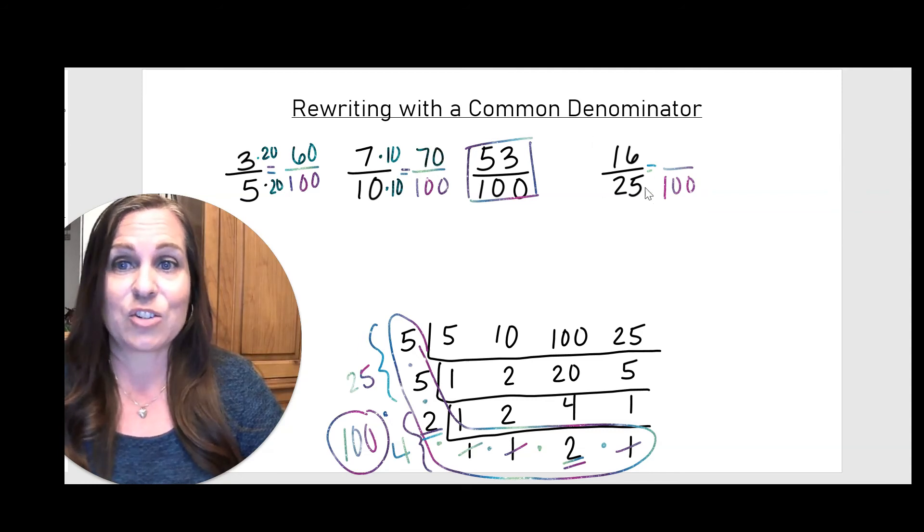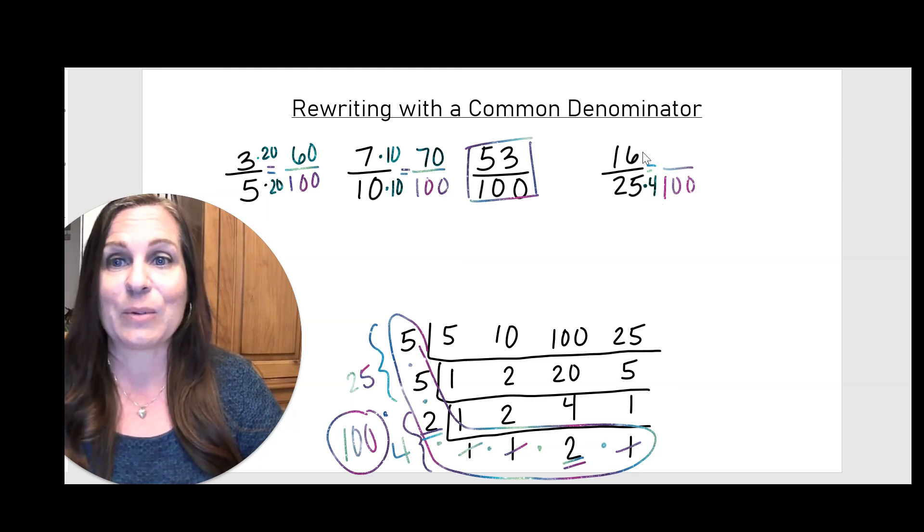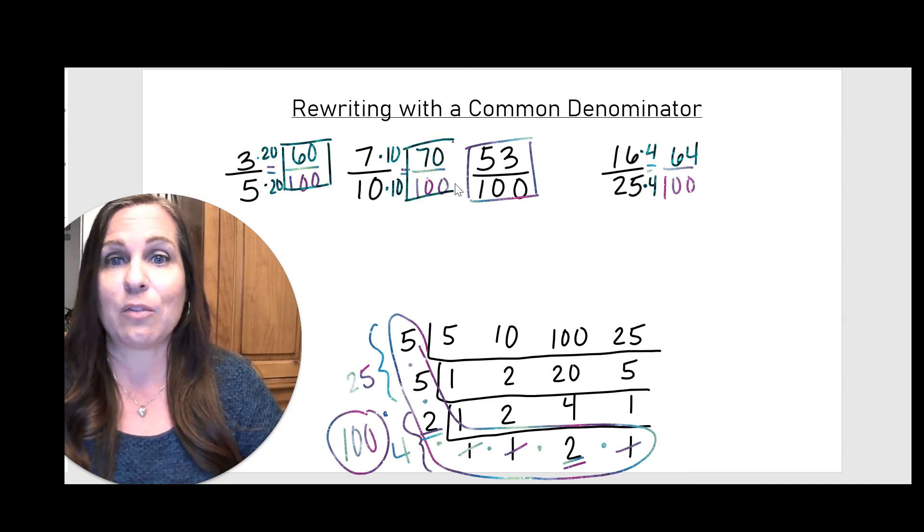And the last fraction, 25 times what is 100? 25 times 4. So I have to multiply by 4 on top. And that gives me 64. Now I've rewritten all of my fractions with a common denominator of 100.